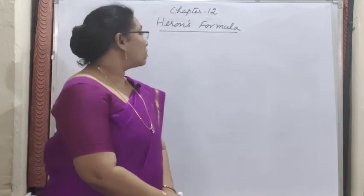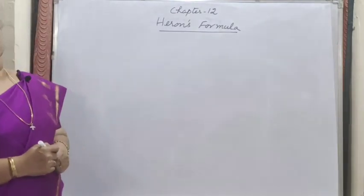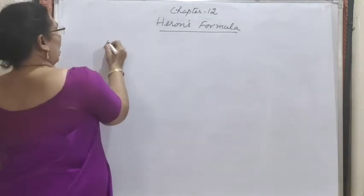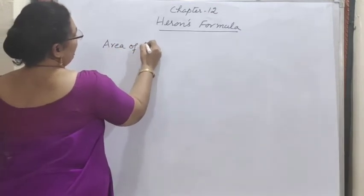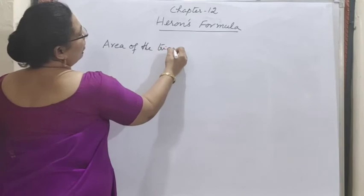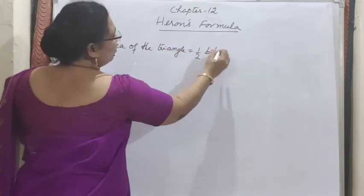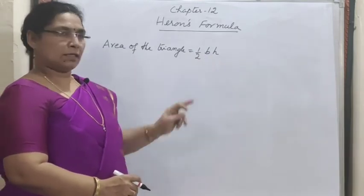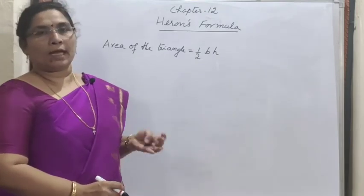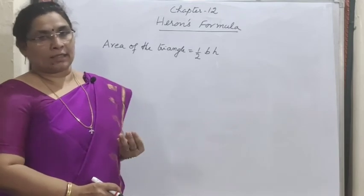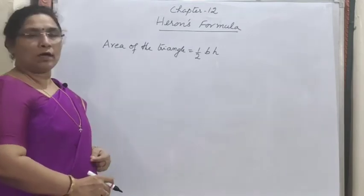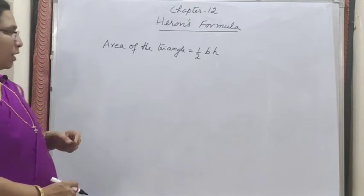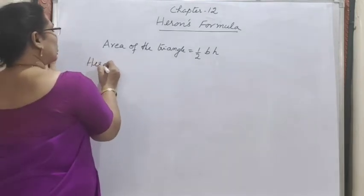Now we are going to start the new chapter, Heron's formula. Heron's formula is used for finding the area of a triangle only. The area of a triangle — you have used the formula half into base into height. That means you should know the base as well as the perpendicular height distance.